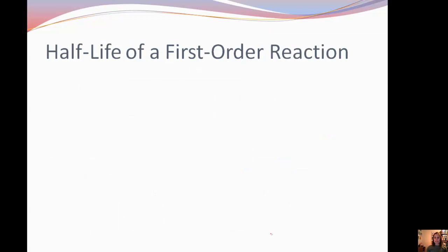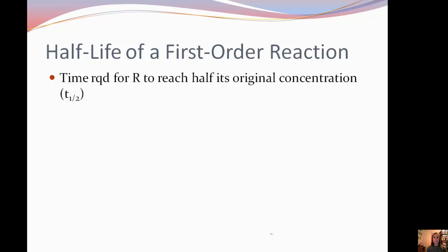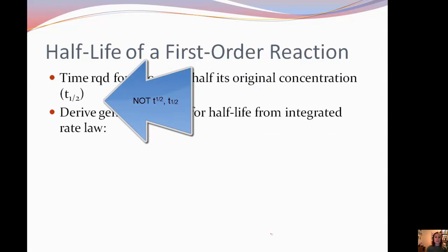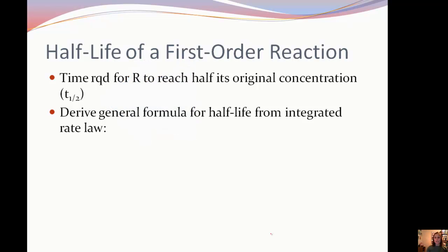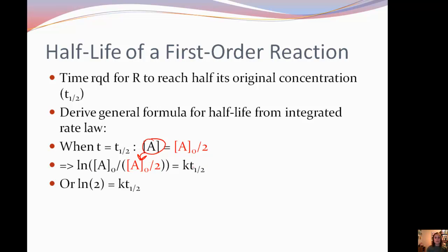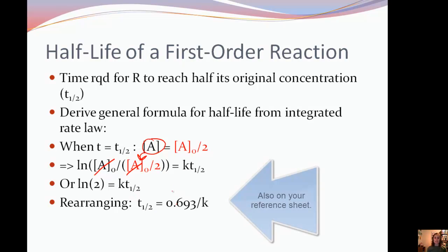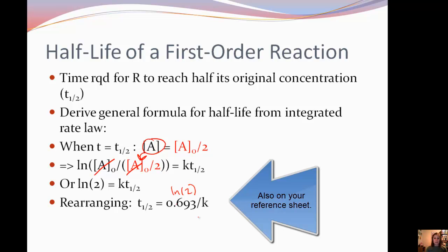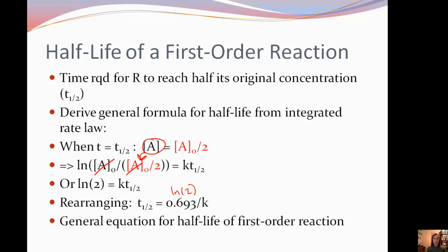The other thing we can do with integrated rate laws is look at half-life — the time required for the reactant to reach half of its original concentration, symbolized as t₁/₂. We can derive the half-life formula from the integrated rate law. When time equals the half-life, the concentration of A equals the initial divided by 2. After substitution and rearranging, we get: ln(2) = k × t₁/₂, so t₁/₂ = 0.693/k. This is the general equation for the half-life of a first-order reaction.